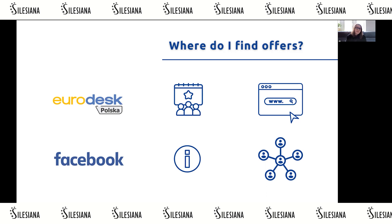They will tell you, for example, 'Do you want to go with me to Italy?' So that's one way to find offers. And finally, the websites of organizations and their social media — if you're already following someone engaged in the Erasmus Plus program, the organization is probably putting a lot of offers on their website. So after this project, you will probably follow the social media of the NGOs from Romania, Latvia, and Poland.